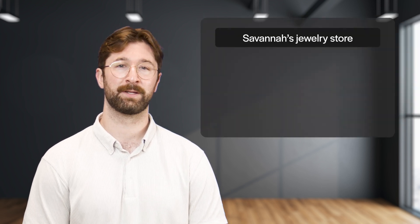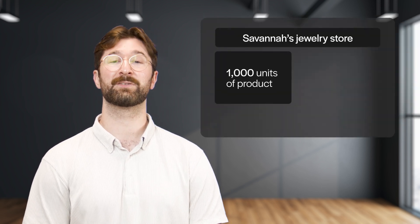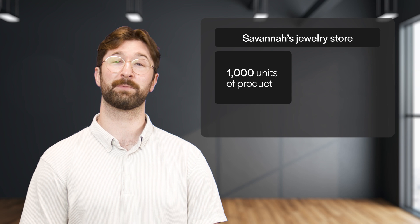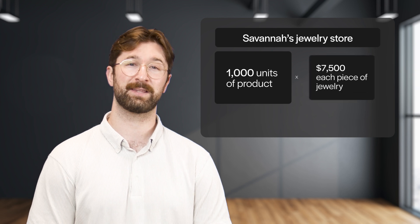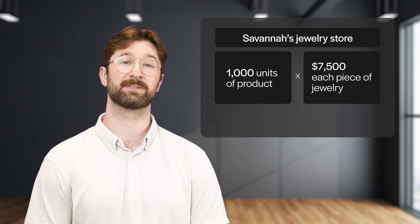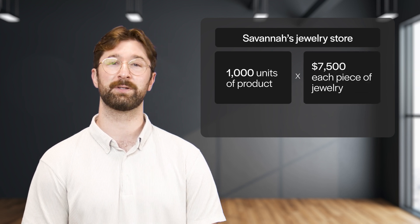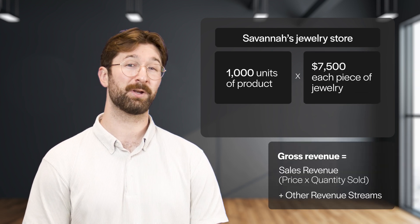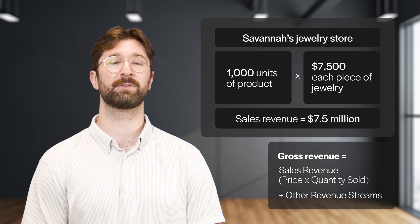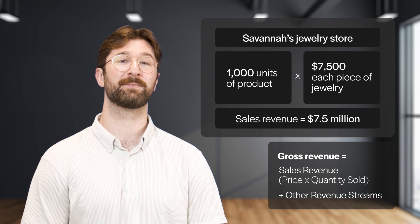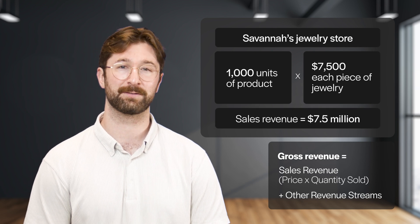For example, let's look at Savannah's jewelry store. They sell a thousand units of a product for $7,500 each piece of jewelry, and putting that into the formula we get a sales revenue of $7.5 million.